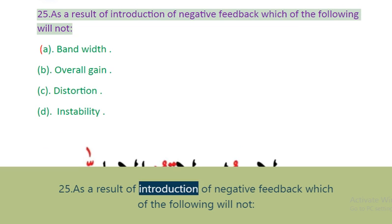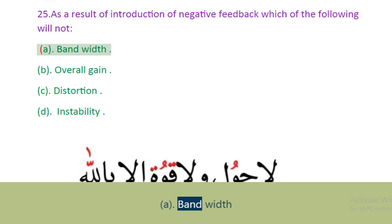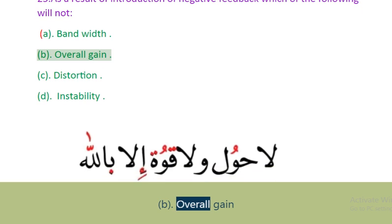Question 25: As a result of introduction of negative feedback which of the following will not change? A. Bandwidth. B. Overall gain. C. Distortion. D. Instability.